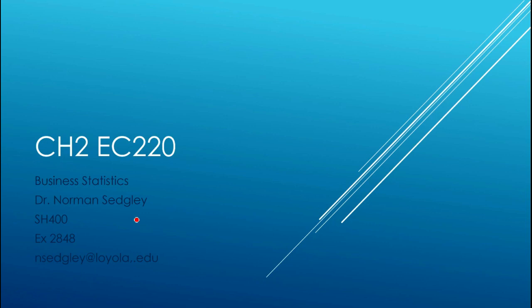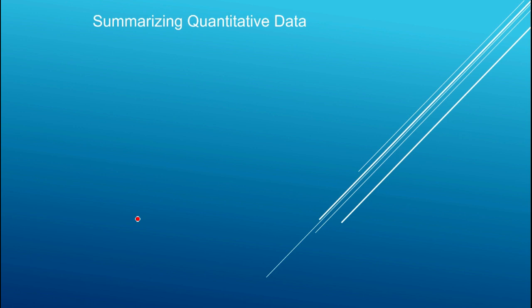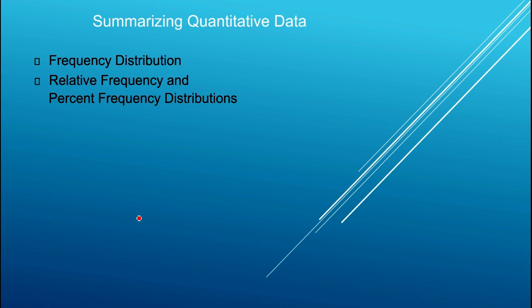Here we will discuss the second main topic in Chapter 2. Chapter 2 discusses descriptive tables and graphs. In the last video we talked about categorical variables, and in this video we're going to talk about summarizing quantitative data. Again, we will talk about frequency distributions, percent frequency, and relative frequency distributions.